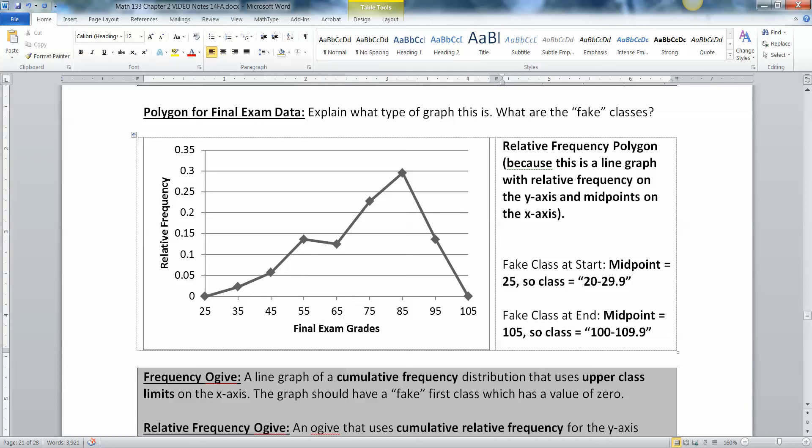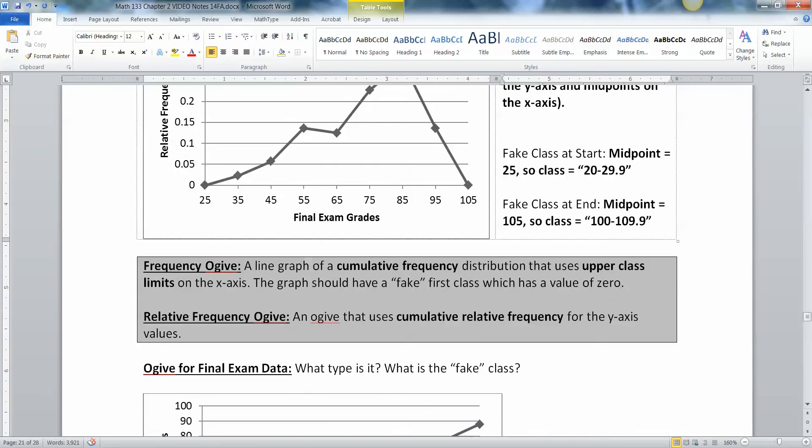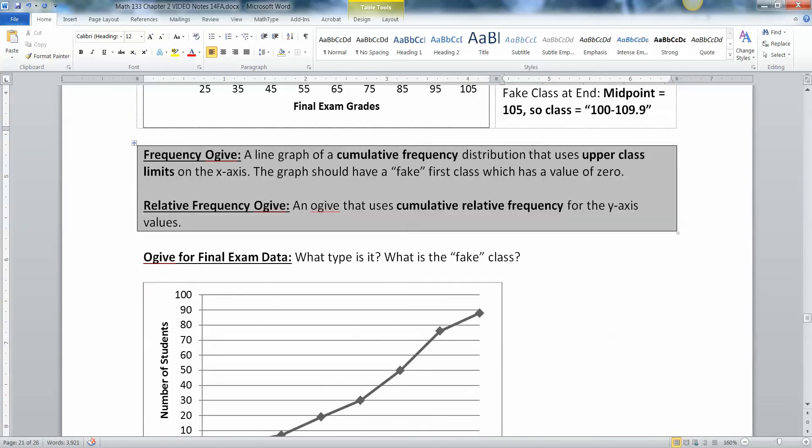Same deal on the other side. If this is 105 and that's 95, then 100 must have been the start of that class. And that means 109.9 is the end of that class in order to keep that 10 width that we've got going on. So notice every single one of these tick marks is 10 apart because that's your class width. All right. So that's a frequency polygon and a relative frequency polygon.